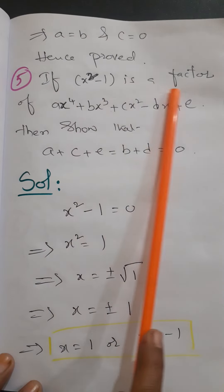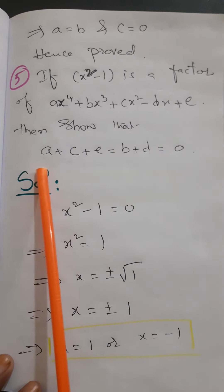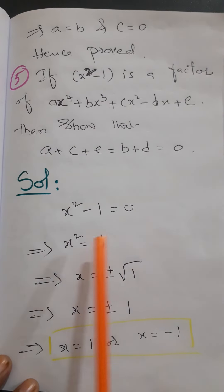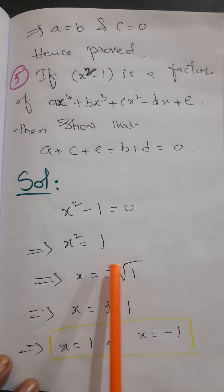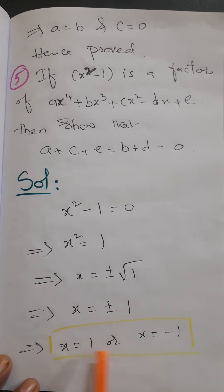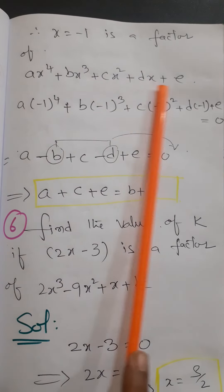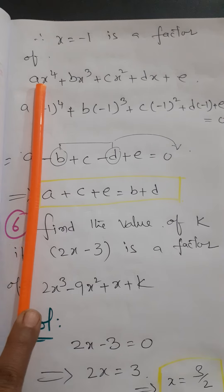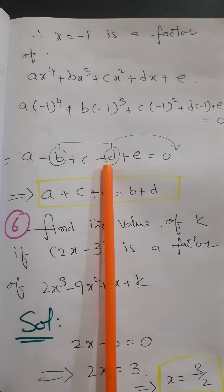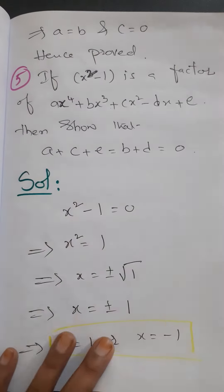Question 5: If x² - 1 is a factor of ax⁴ + bx³ + cx² - dx + e, show that a + c + e = b + d = 0. Setting x² - 1 = 0 gives x = ±1. Substituting x = -1: a - b + c - d + e = 0. Rearranging, a + c + e = b + d. Since both equal 0, we have proved a + c + e = b + d = 0.